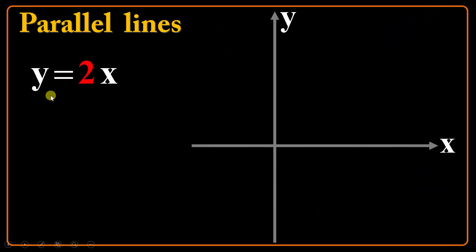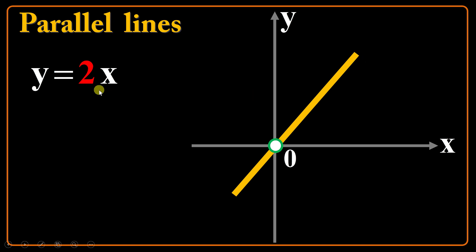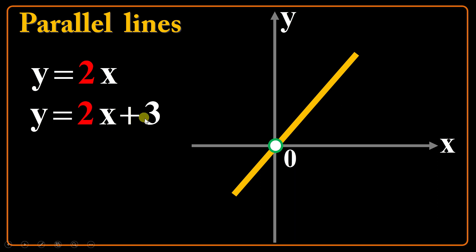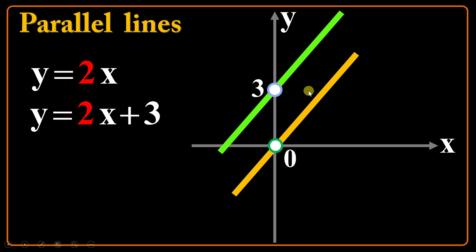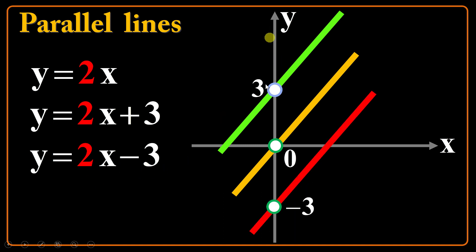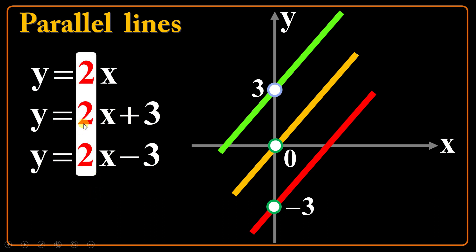Parallel lines. Suppose the equation of a line is y equals 2x — an ascending line with slope 2 and no y-intercept, passing through the origin. If I give you another equation like y equals 2x plus 3, we have the same slope but a different y-intercept of 3. And y equals 2x minus 3 has y-intercept of negative 3 but still the same slope. When the slopes of lines are the same, I can confirm that they are parallel — forget about the vertical shift or vertical intercept.